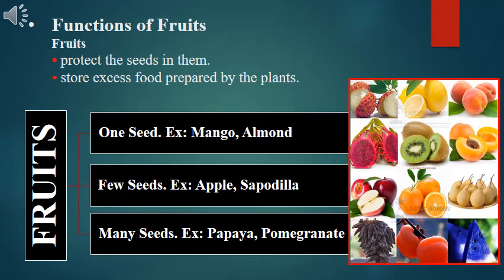There are two main functions of fruits: fruits protect the seeds in them, and fruits store excess food prepared by plants. Fruits may have one seed — for example, mango and almond — a few seeds — for example, apple and sapodilla — or many seeds — for example, papaya and pomegranate.